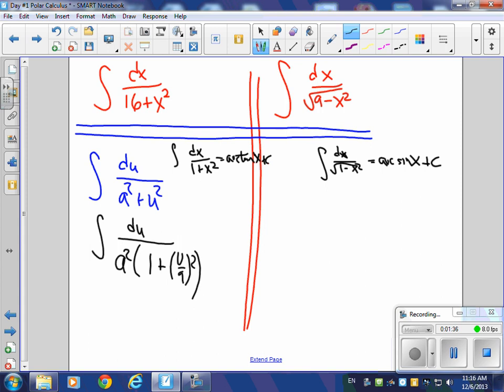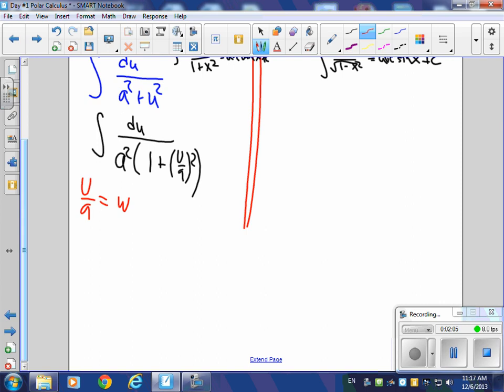Now, du over a squared, 1 plus u over a quantity squared. Next thing that you're going to do is you're going to say, I'm going to let u over a be equal to something we're going to call w. And what's the derivative with respect to u here? If I took the derivative of this, what's dw equal to? a is a constant, so we'd go 1 over a times du. You okay with that?